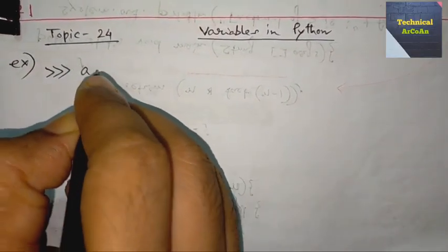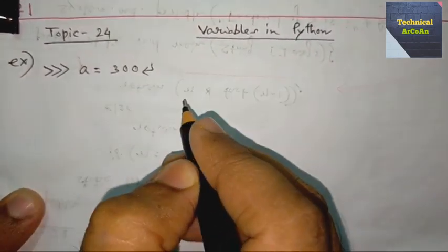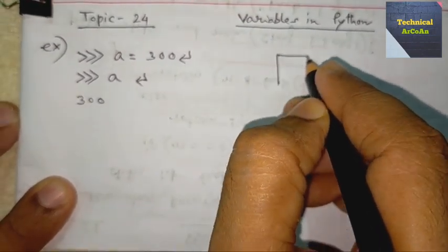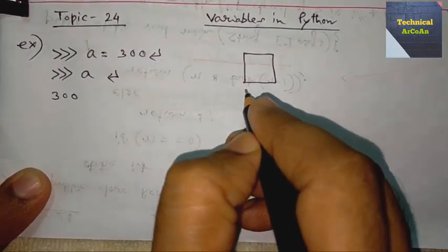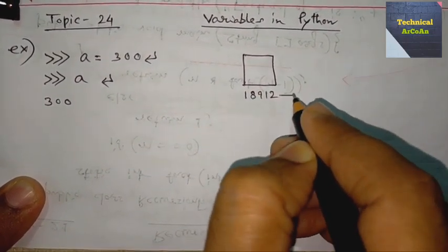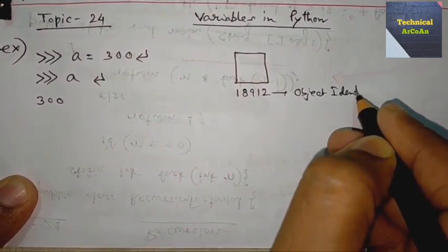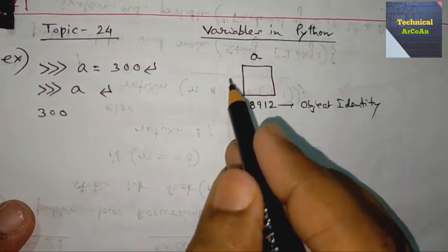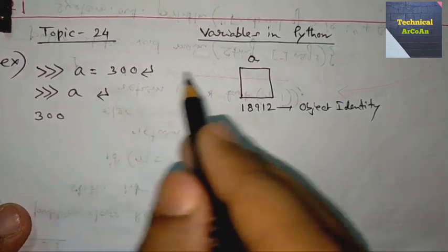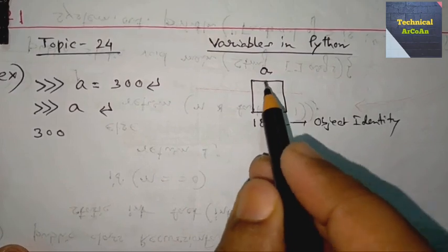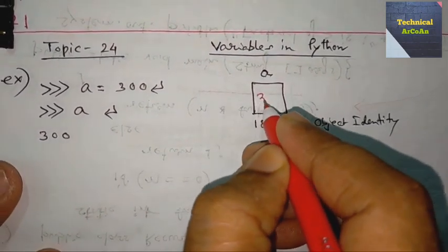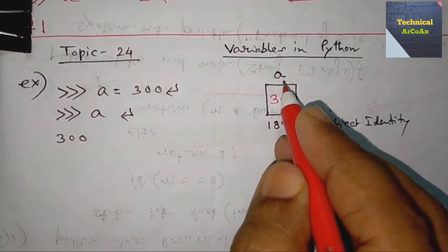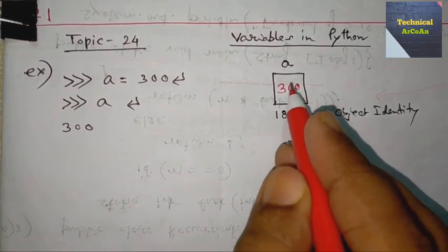Now suppose we write a = 300. In memory, an integer object is created with object identity 18912. The variable name is a, and a is a reference to that integer object whose value is 300. In Python, variables are references to objects — here a is referencing an integer object whose value is 300.